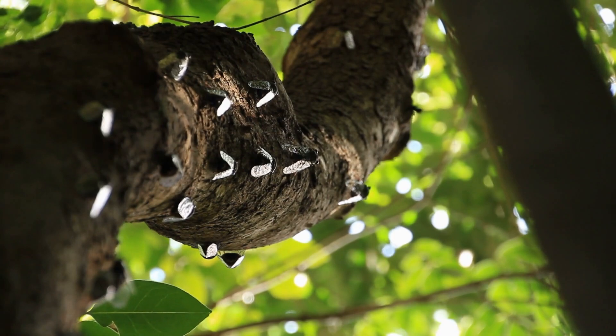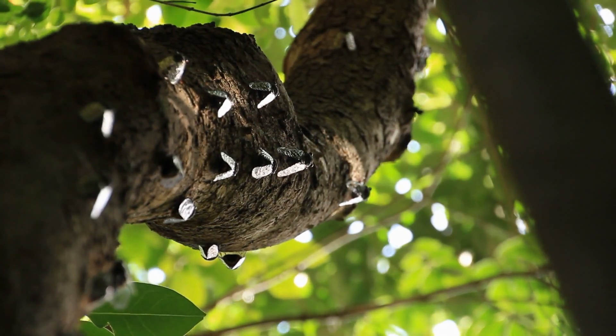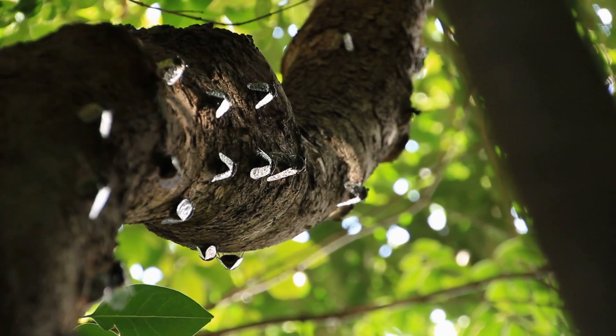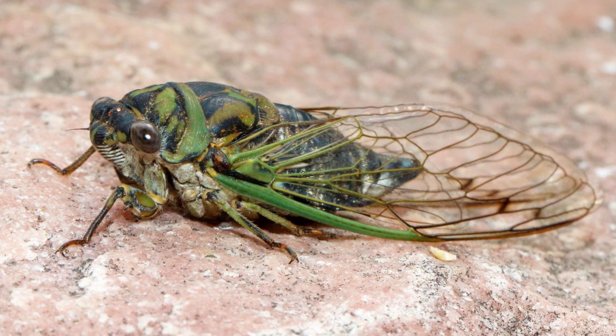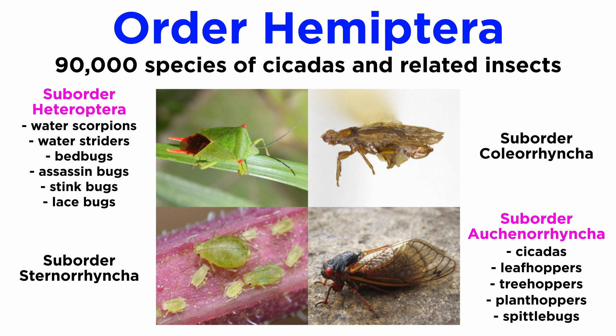Some, like the periodic cicadas of the eastern United States, emerge in massive numbers, and their calls can be heard over great distances. Though most species are extremely small, some, like some annual cicadas, can grow to more than 7 inches in length. Suborder Heteroptera also includes more than 40,000 species, and its members are often called true bugs. They include the water scorpions, water striders, bed bugs, assassin bugs, stink bugs, lace bugs, and many others.